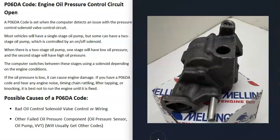Some other things that could cause this code are other failed components related to oil pressure, such as a bad oil pressure sensor, a bad oil pump, or a bad variable valve timing solenoid. Usually when that happens, you're going to get other codes as well, so be sure to pay attention to those. Just keep in mind that if some other problem is stopping that solenoid from working, that could cause issues.